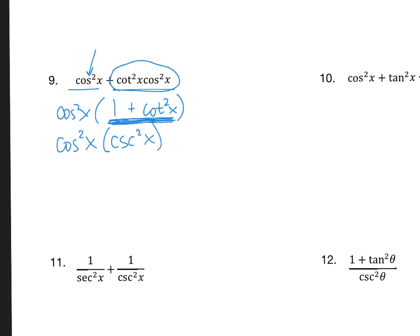So cos²x times csc²x. Then again, following my own advice, I am going to change anything that I can to be in terms of sines and cosines. This first term I'm not changing, I'm just going to put it over 1, and then this is the reciprocal of sin²x.